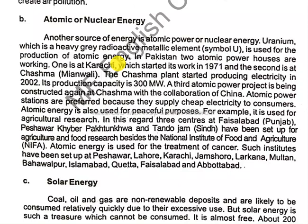Nuclear energy uses uranium, a radioactive element, for atomic energy production. In Pakistan, two atomic power houses are working. One is at Karachi, which started in 1971, and the second is at Chashma, Mianwali.